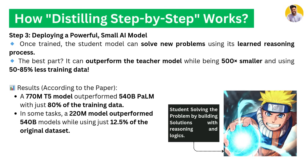In step three, we deploy a powerful small AI model. Once trained, the student model can solve new problems using its learned reasoning processes. The best part — it can outperform the teacher model while being 500x smaller and using 50 to 80% less training data. According to this research paper, a 77 million parameter T5 model outperformed the 540 billion parameter PaLM model with just 80% of the training data. That's how the student solves problems with reasoning and logic better than their teacher.